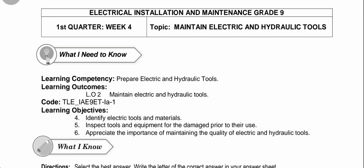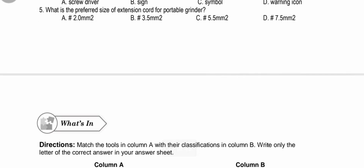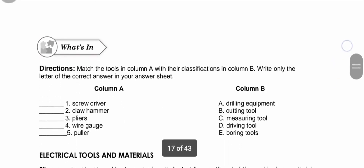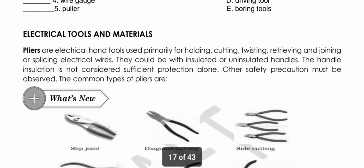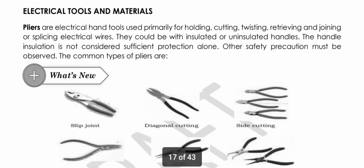For this day, I would like you to answer the 'What's In' activity. Tomorrow we are going to check this activity in our follow-up discussion. Please secure your answer. For the direction: match the tools in Column A with their classification in Column B. Write only the letter of the correct answer in your answer sheet. Column A: number one, screwdriver; number two, claw hammer; number three, pliers; number four, wire gauge; number five, puller. You need to identify their classification in Column B.